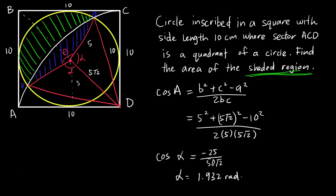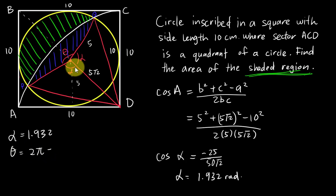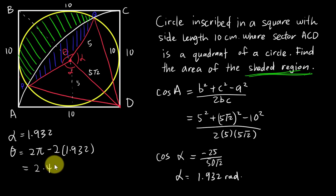Now that we have alpha = 1.932 radians, we find theta for the big sector. The full circle is 2π, so: θ = 2π − 2α = 2π − 2(1.932) = 2.419 radians. Now we have the angle for the large sector ready.